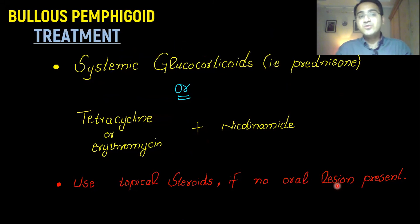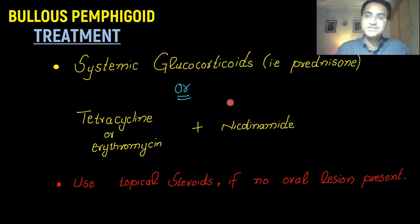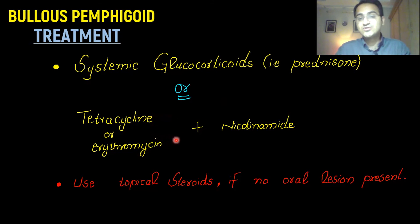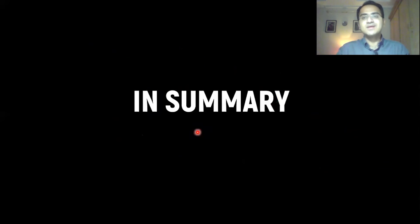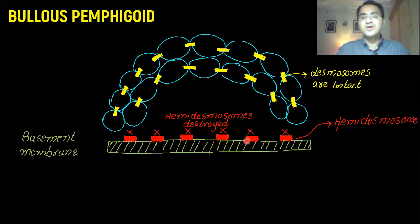Treatment of bullous pemphigoid: since it is an autoimmune disease, glucocorticoids are given to suppress the immune system — prednisone is used. Alternatively, a combination of tetracycline with erythromycin plus nicotinamide can be given. Topical steroids can be used in bullous pemphigoid if no oral lesions are present.